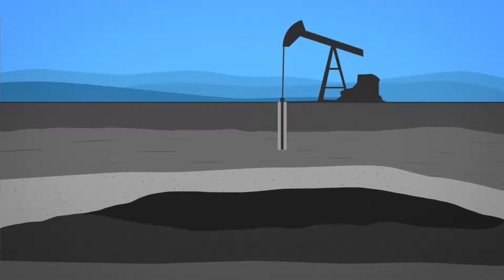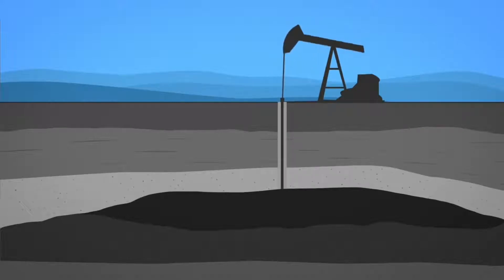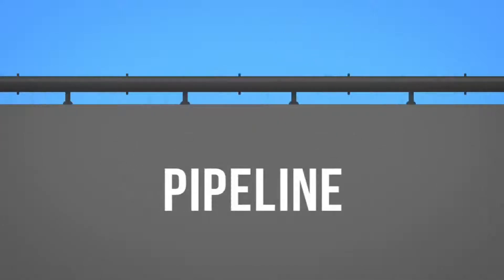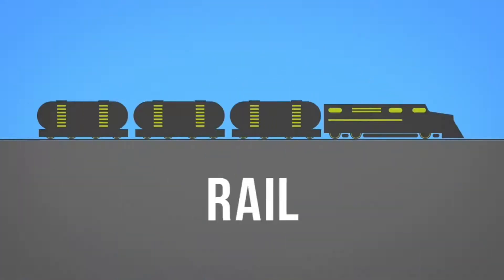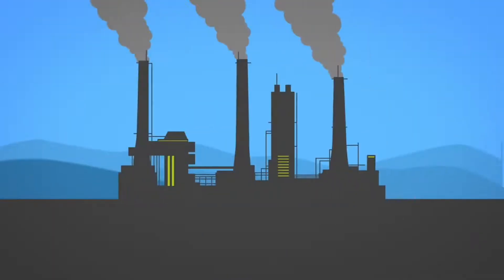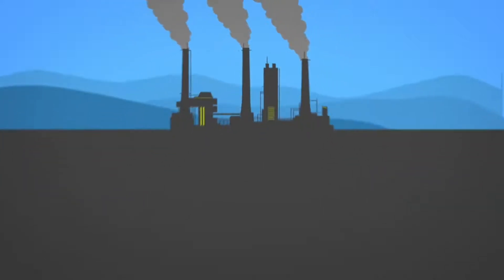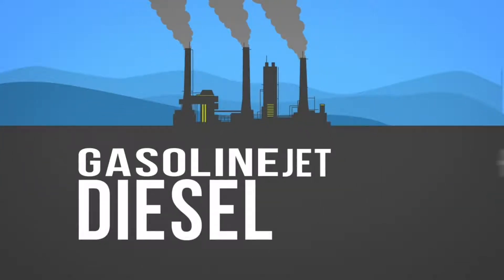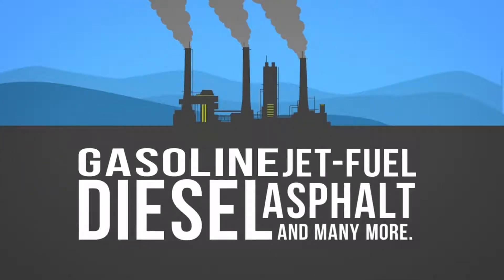Oil is extracted from the reservoir most commonly by drilling a well. Once recovered, oil is transported by pipeline, ship, rail, or truck to a refinery where it undergoes a complex refining process that creates petroleum products like gasoline, diesel, jet fuel, asphalt, and many more.